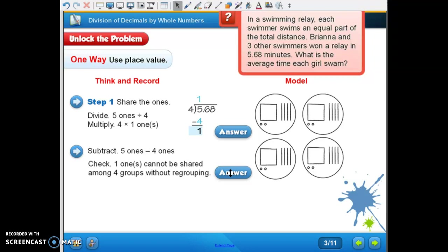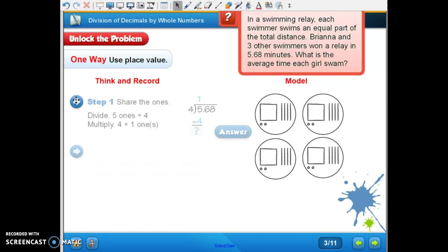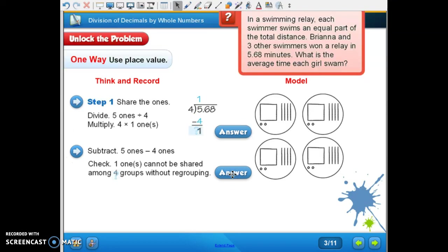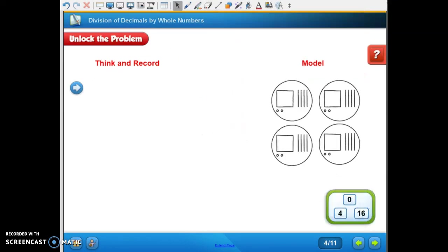So if we were to model that, we would have, here's our four circles. And we're going to put one one in each circle. And we're going to have that one whole left over.